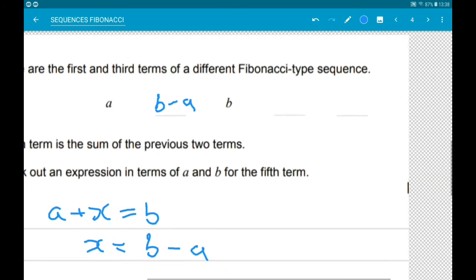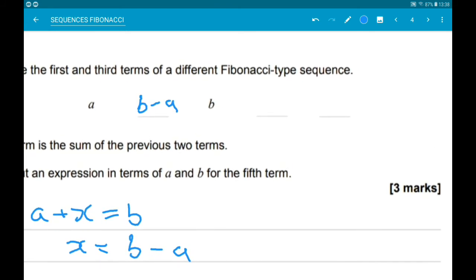So our second term is B minus A. Now our fourth term is B minus A plus B, so that's 2B minus A. And then the fifth term is B add 2B minus A, so that's 3B minus A.